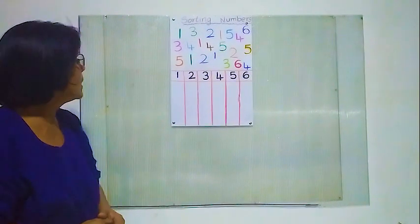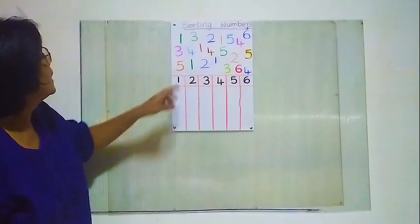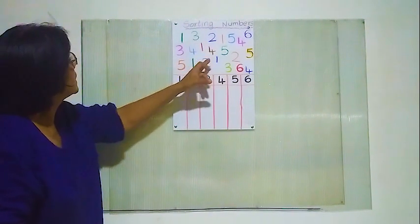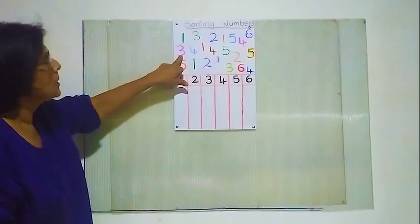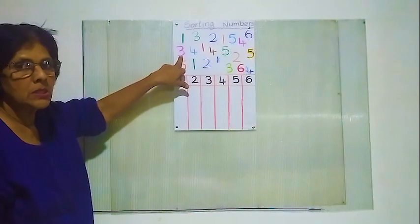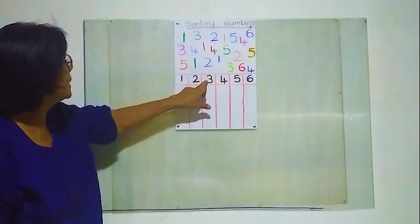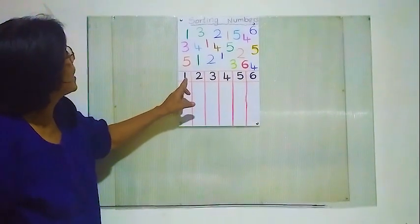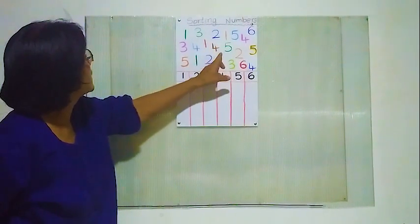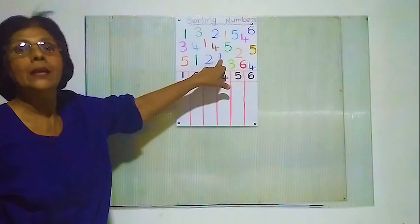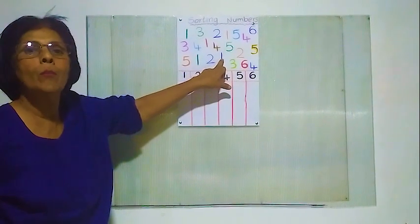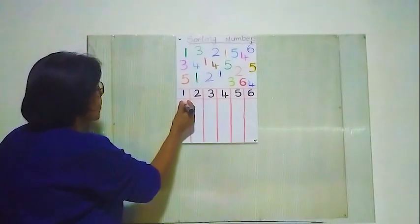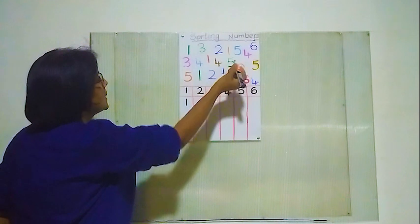First we'll find number 1. Where's number 1? Is this one number 1? No, this is number 3. We are searching number 1. Yes, number 1 — here. Is this number 1? Yes, this is number 1. So you must write here number 1. We will put a dot. That's finished.